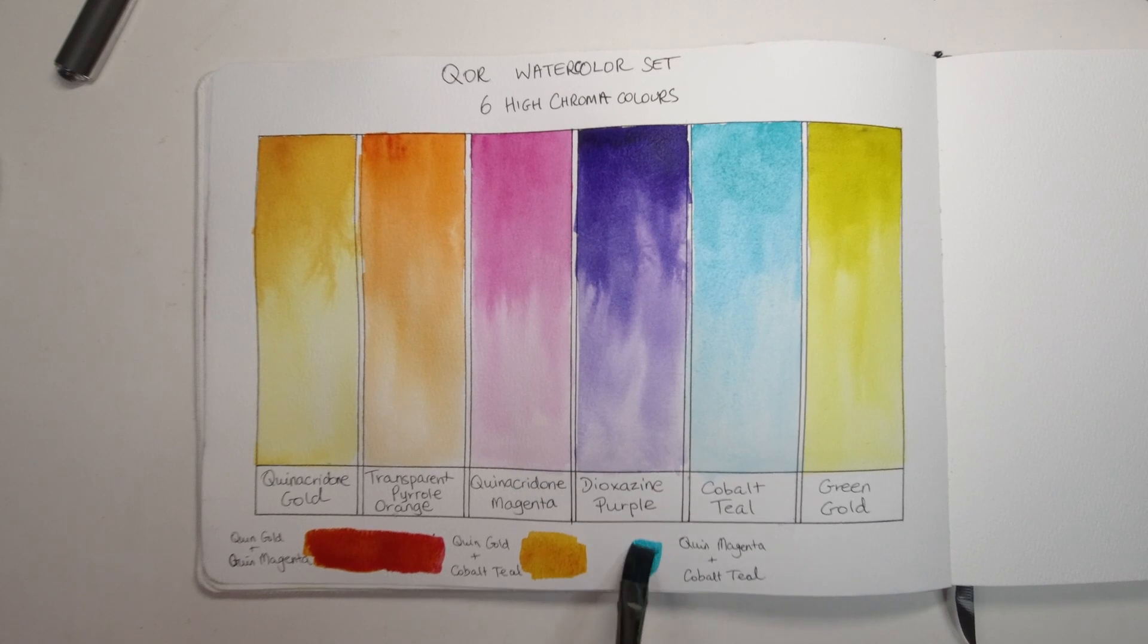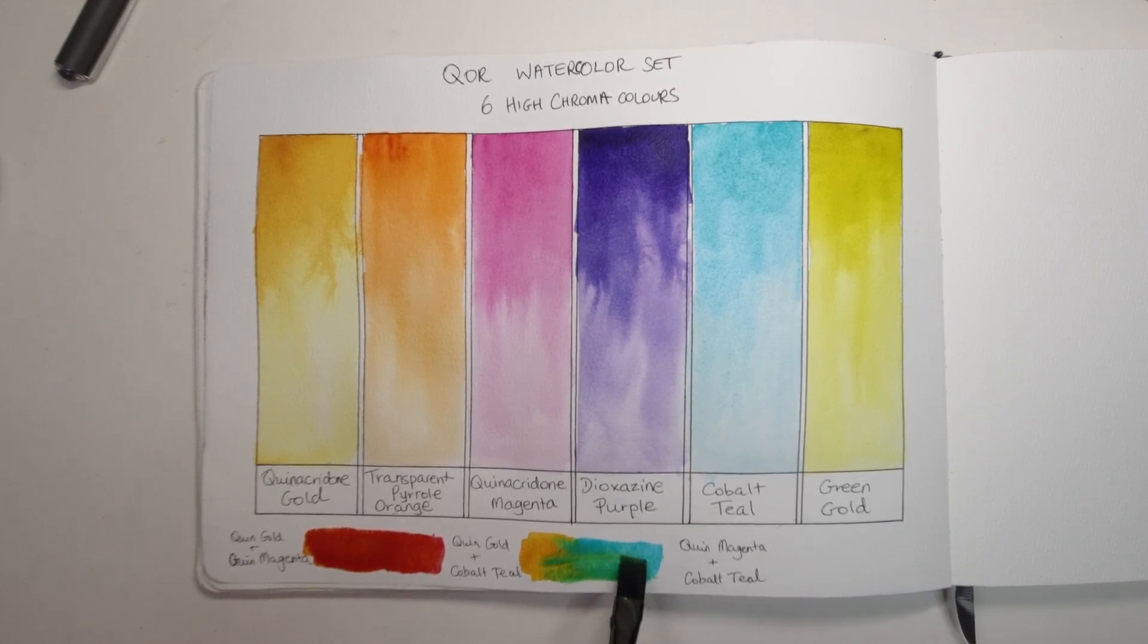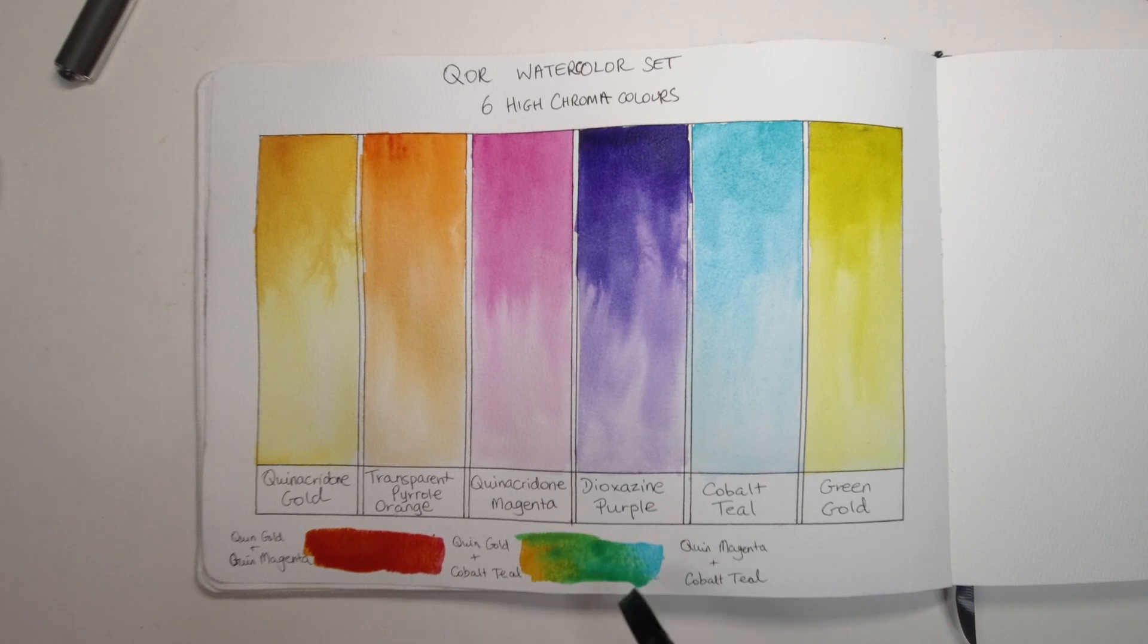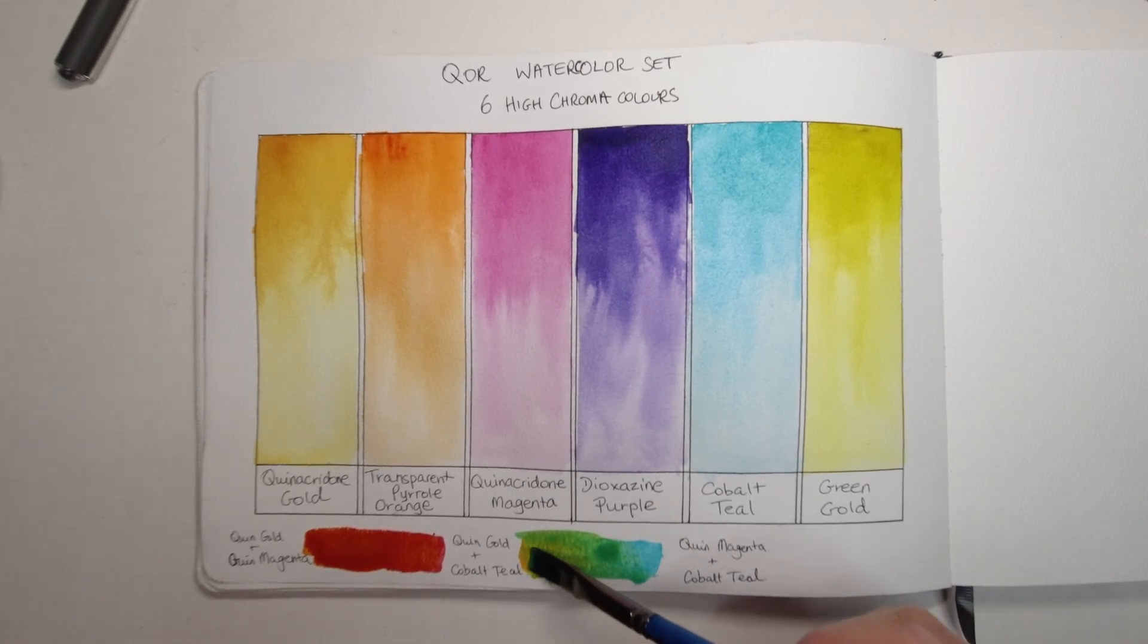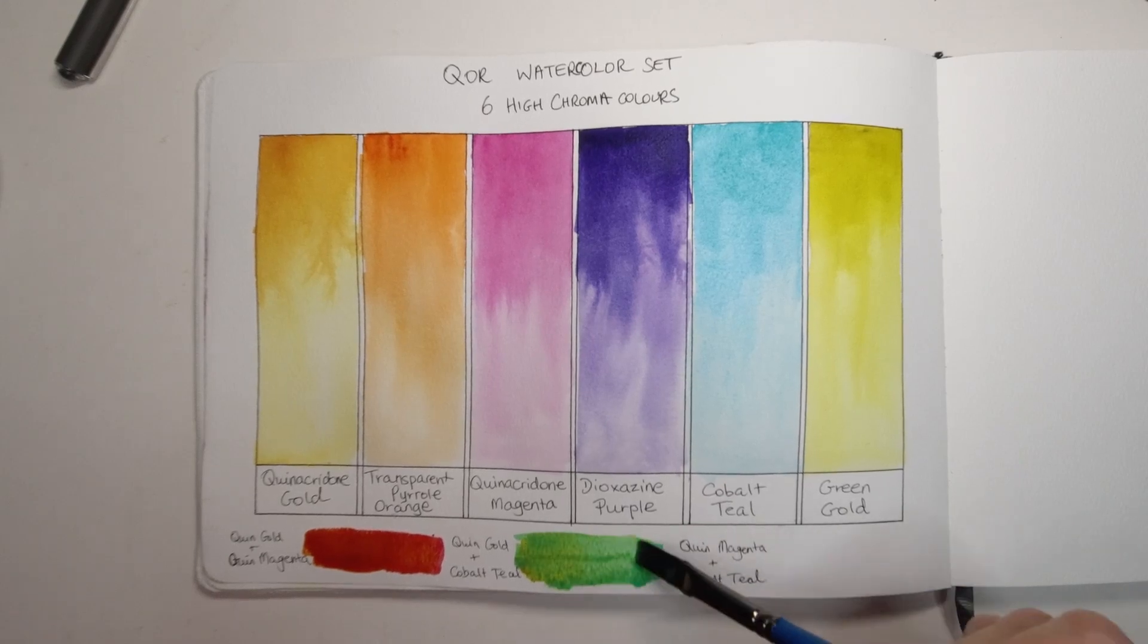Next I did quinacridone gold with cobalt teal and can you see that green coming out? I was really surprised because the quinacridone gold looks so orange in its deeper tones, but when it mixed with the cobalt teal it just went into this beautiful green. I loved it.